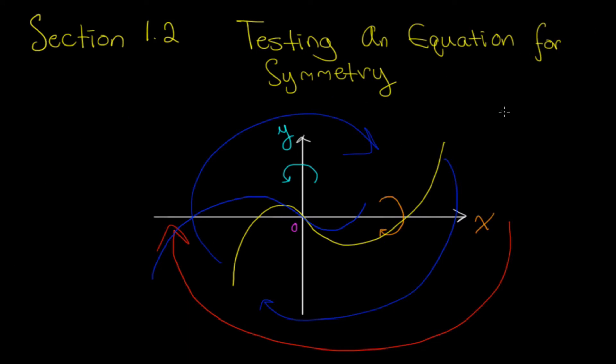If you plug in negative y for an equation, and you get the same equation after you get rid of the negatives with squares or even exponents and stuff like that, if you plug in negative y and you get the same value for an equation, then the function is symmetric about the x-axis. If you plug in negative x and you get the same equation you plugged negative x in for, then the equation is symmetric about the y-axis.